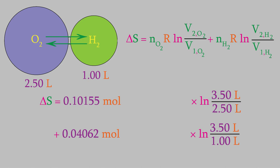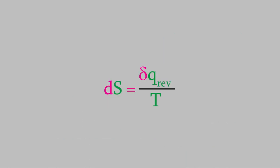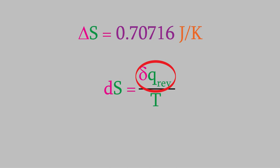Notice that this time we won't want to use the same value for R, the gas law constant, that we used earlier. If we use 0.08206 liters atmospheres over Kelvin moles, the units of liters and atmospheres won't cancel out. For that reason, we'll use the other value we know for R, which is 8.314 joules per Kelvin mole. When we plug all this into the equation, we can calculate the overall entropy, which turns out to be 0.70716 joules per Kelvin. Notice that our units for entropy are joules per Kelvin, which makes sense because the Gibbs definition of entropy is the heat exchange divided by the temperature.